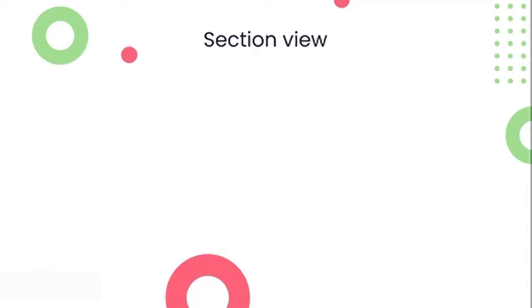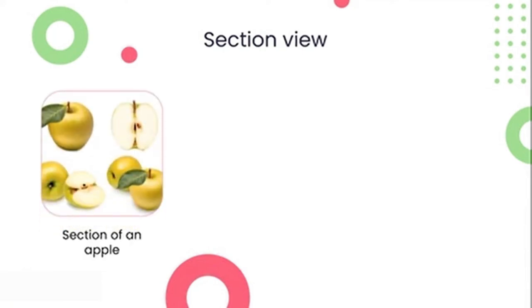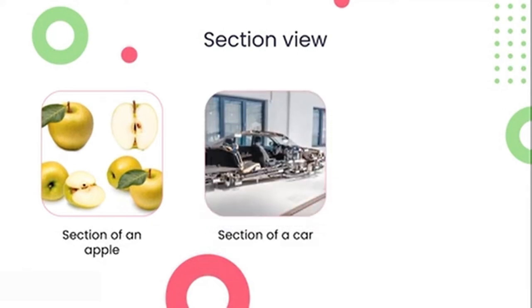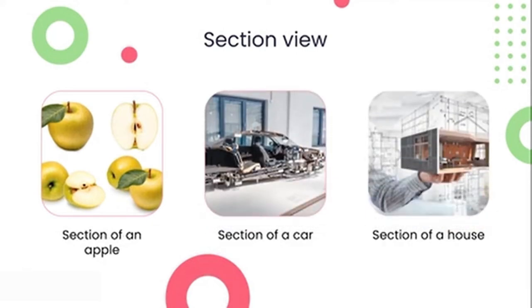Have a look around to see if you can picture an object near you in a section format — this requires the brain to nitpick at detail. We could have a section of an apple, a section of a car, or a section of a house. Can you see how, once an object is cut through, we can see a lot more detail than if we were looking at an elevation or just a side view without a cut?